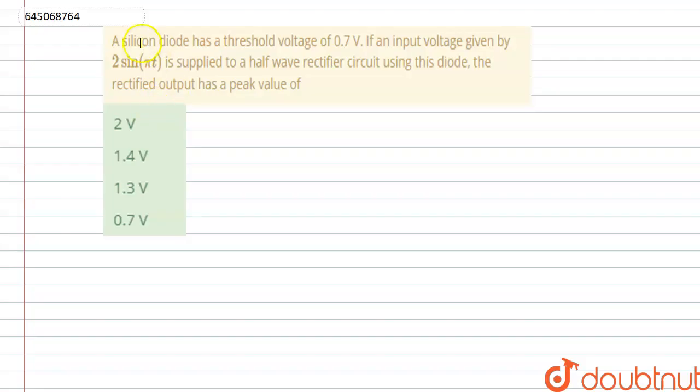Hello everyone, let's start the question. Question C: A silicon diode has a threshold voltage 0.7 volt. If an input voltage given by 2 sin pi t is supplied to a half wave rectifier circuit using this diode, then the rectified output has a peak value of